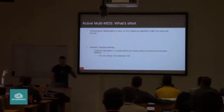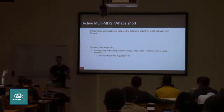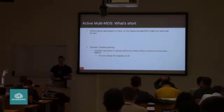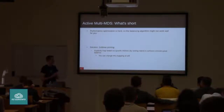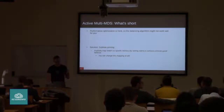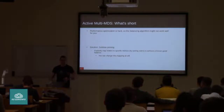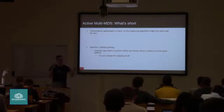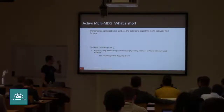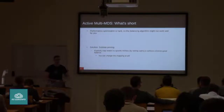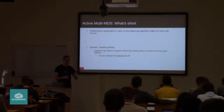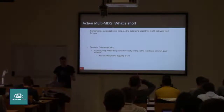CephFS uses cooperative partitioning where metadata servers keep a heat map of how hot their metadata is within folders and try to keep total heat evenly distributed. It will migrate subtrees while maintaining locality so you don't bounce between servers traversing a folder structure. If the automatic balancer doesn't work well for your workload, you can pin specific subtrees to specific MDSs. You can change that mapping at any time by setting an extended attribute — no reboots needed and it happens silently in the background.